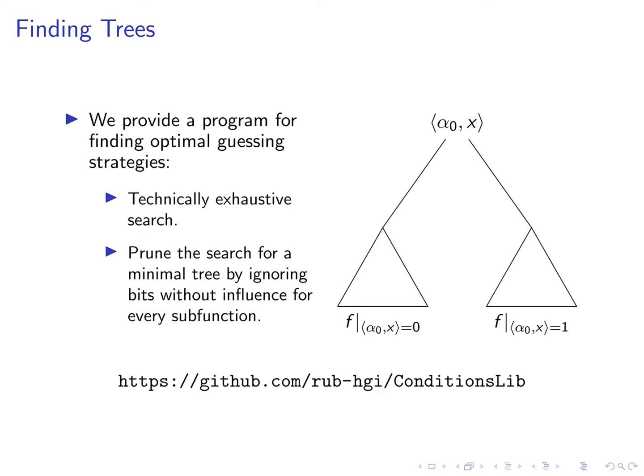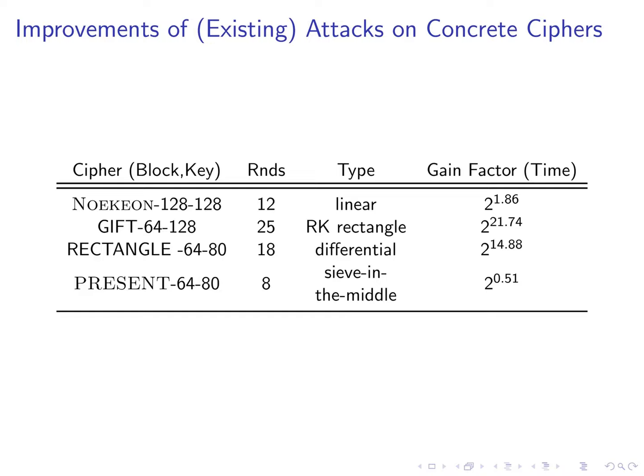Here is a table of the attacks we improved. Our general approach was to manually analyze the dependencies through the cipher and whenever we needed to evaluate some non-linear expression we applied the algorithm I've just sketched. Our attack framework is so general that it also applies to several extensions of linear and differential cryptanalysis and even some unrelated attacks like the meat in the middle attack. For Noikian and Rectangle we improved the best attacks. While the improvement for Noikian is small the ones for GIFT and Rectangle are significant.